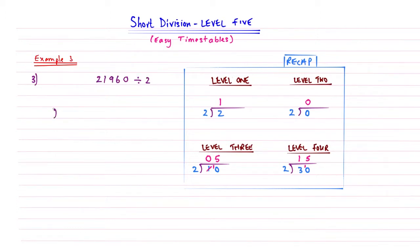Okay, so here we have a slightly longer example, so you can see how it works with a longer one. So 2, 1, 9, 6, 0. So 21,960 shared amongst two things. And then let's take each digit in turn.